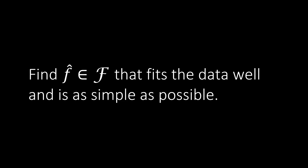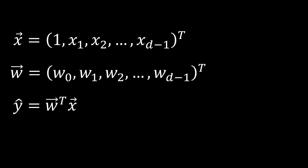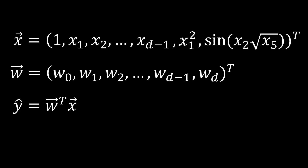Let's consider linear regression as an example. In linear regression, we can add features to our feature vector and assign corresponding weights. We want to add many features such that our model is for sure expressive enough to approximate the target function. Now, how can we tell this model that we prefer simpler solutions without removing any of the features we added?